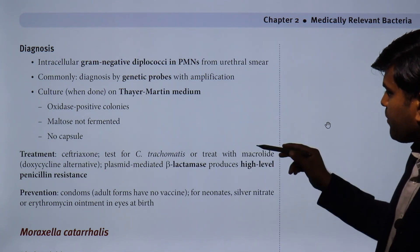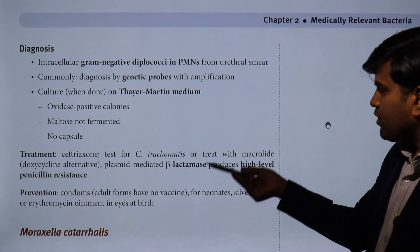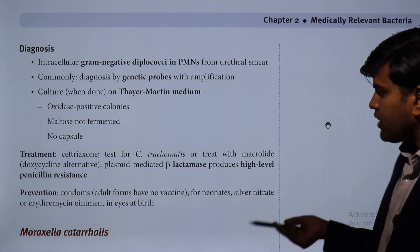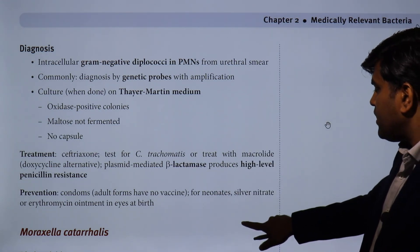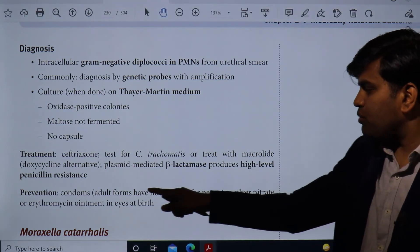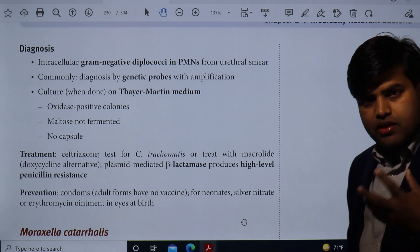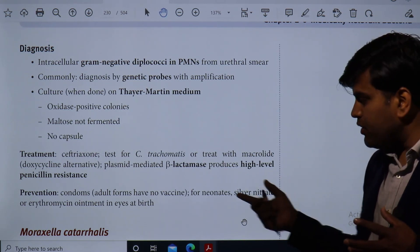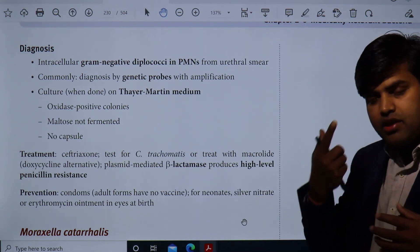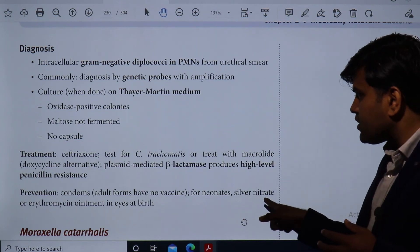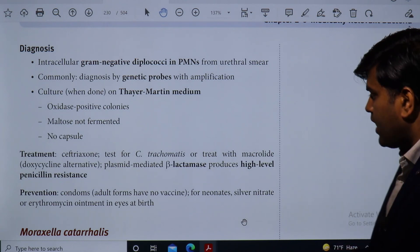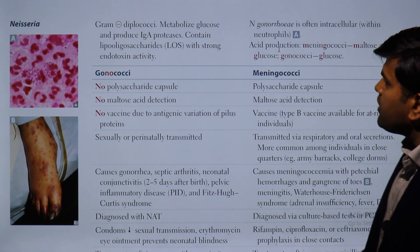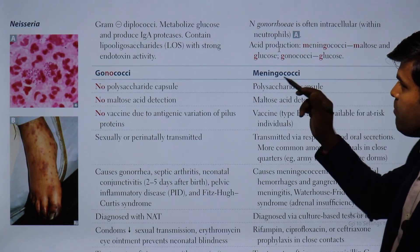On Thayer-Martin medium, colonies are oxidase positive and do not ferment maltose, and N. gonorrhoeae does not have a capsule. Treatment: ceftriaxone for gonorrhea, plus treatment for co-infection with Chlamydia trachomatis using a macrolide or doxycycline. Plasmid-mediated beta-lactamase production causes high-level penicillin resistance. Alternative treatment is doxycycline. Prevention: condoms. For neonates, silver nitrate or erythromycin ointment is applied to the eyes at birth to prevent ophthalmia neonatorum.